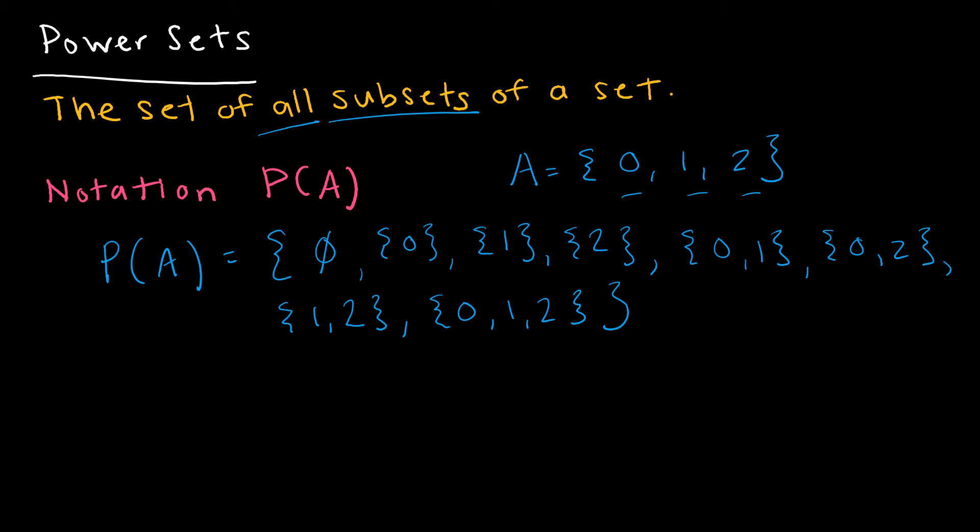Or I could have three of those elements, 0, 1, 2. Now keep in mind, because order doesn't matter, I wouldn't have to write 0, 1 and 1, 0, because those are the same set. So how many elements does the power set have? 1, 2, 3, 4, 5, 6, 7, 8. So the cardinality of the power set of A is 8.